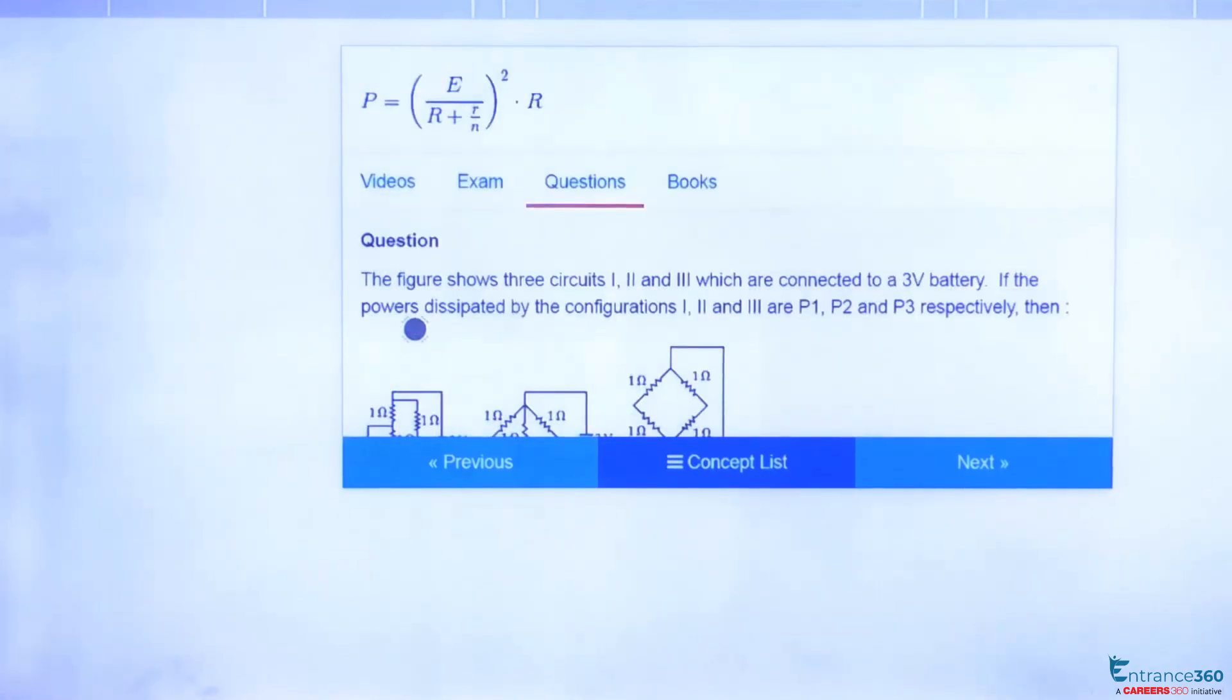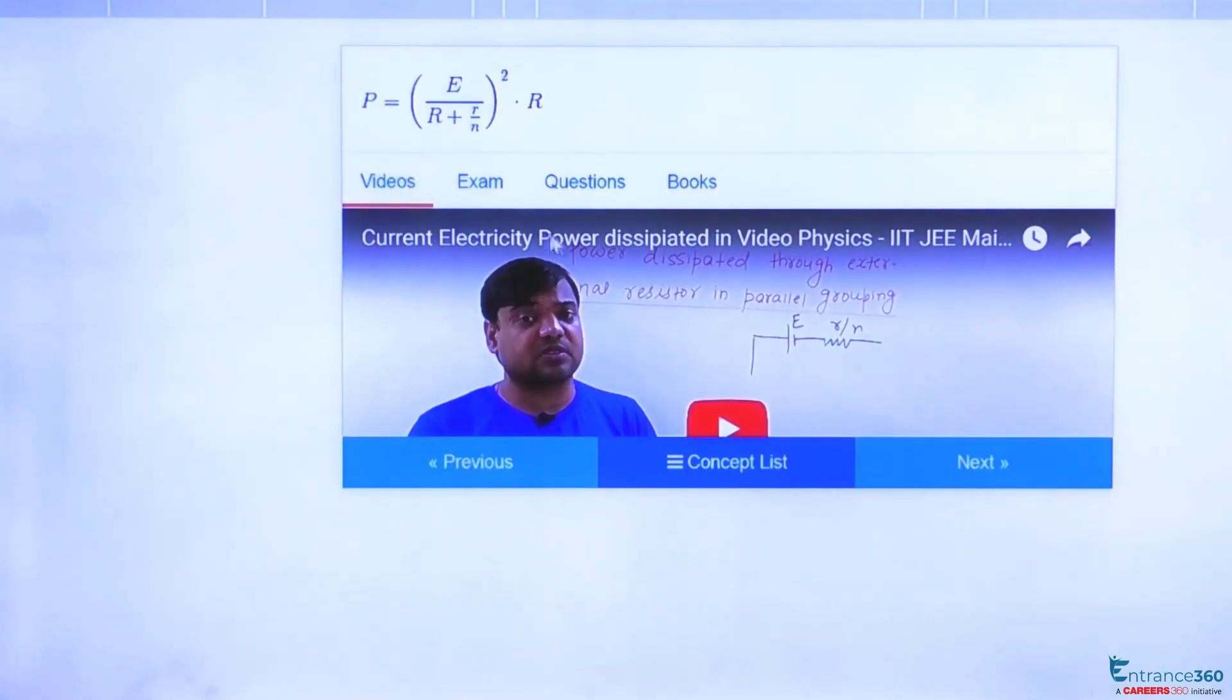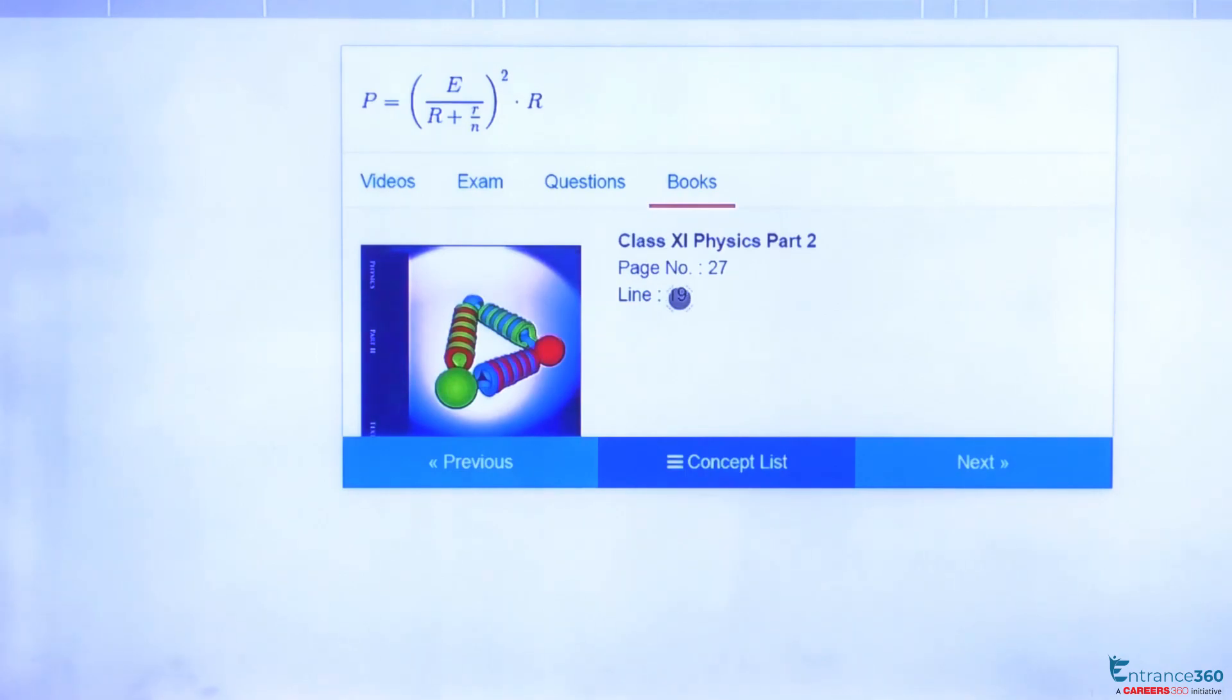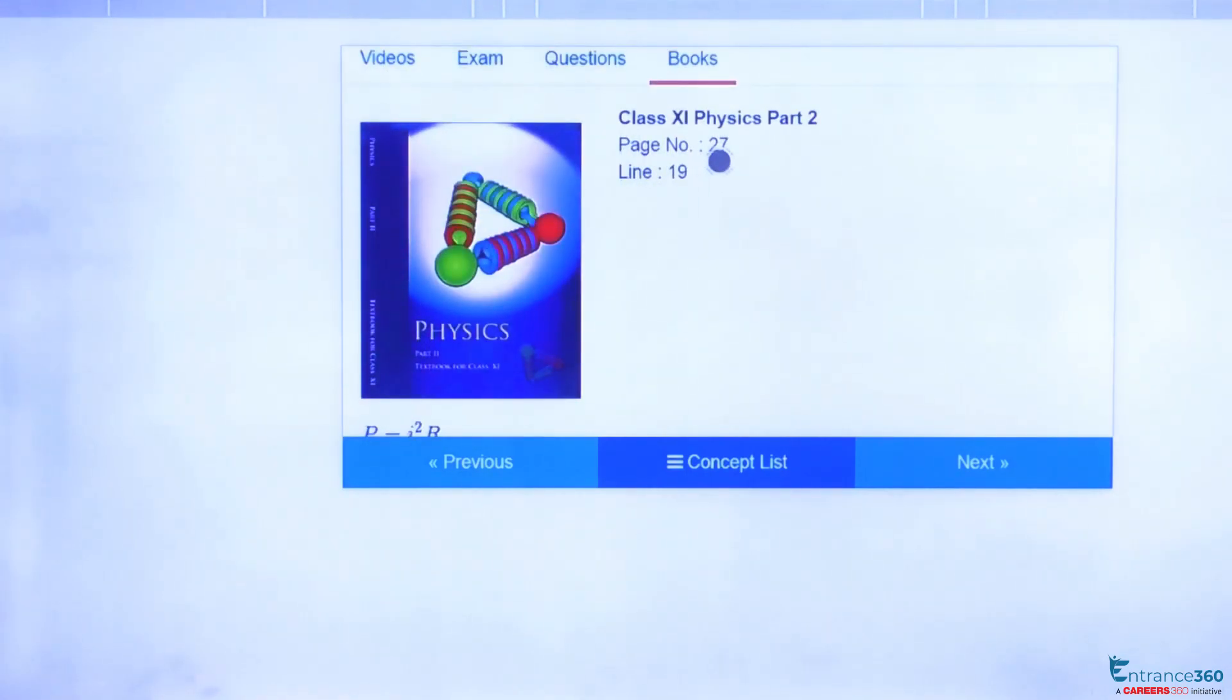To know more about power dissipation and resistance, you can watch the video here which is of small duration. You can get the concept from book NCERT part 2. This is 12th class NCERT part 2. Concept is available in 12th class. Thank you students.